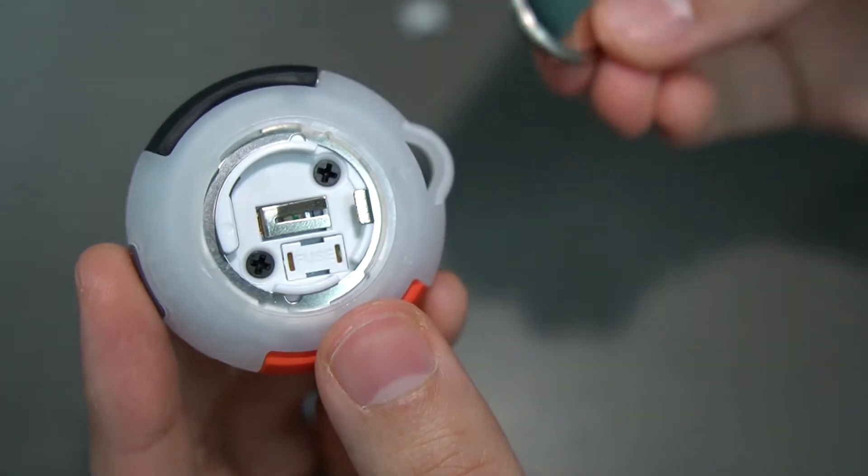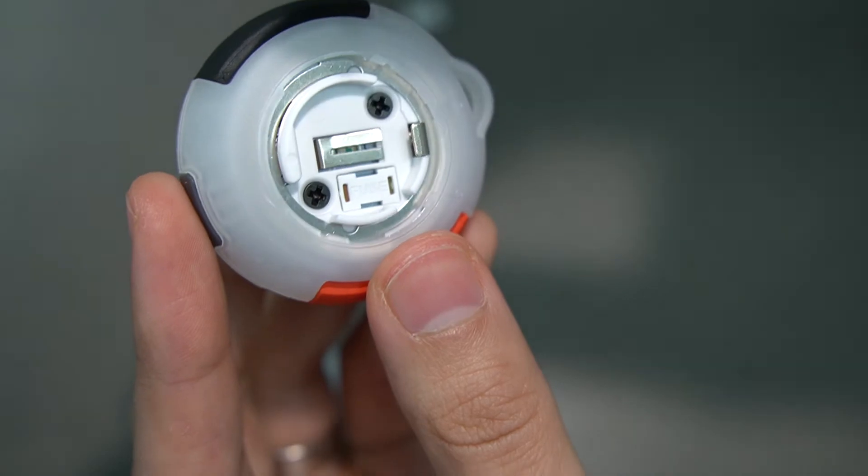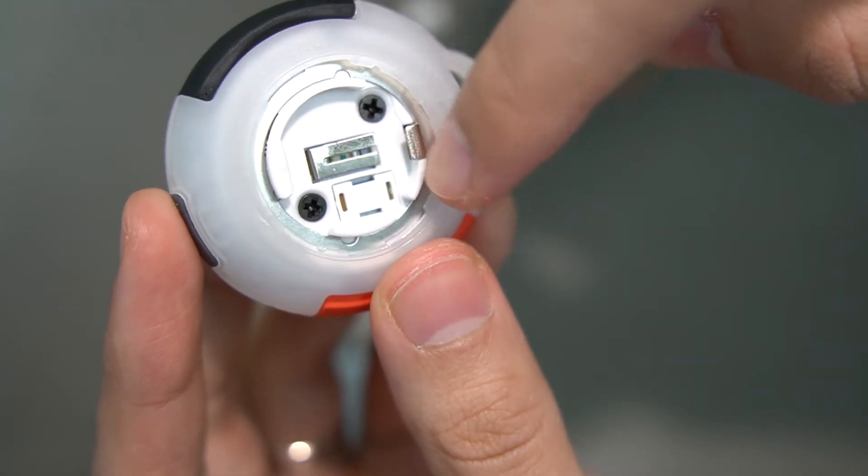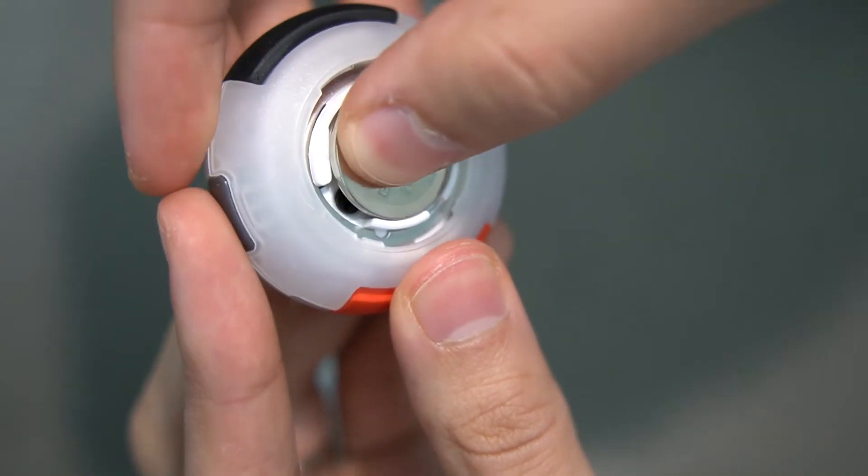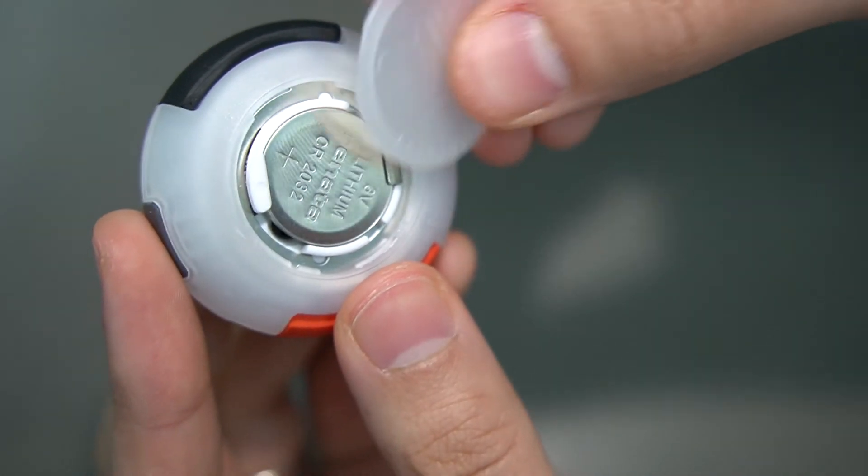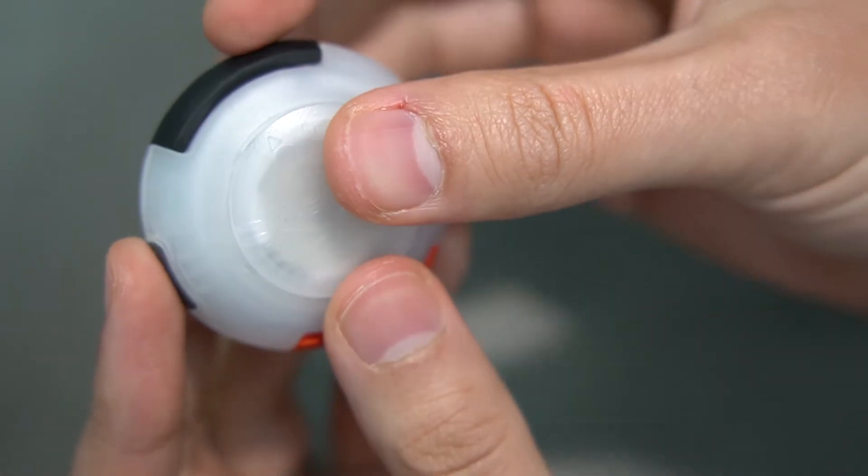So that's the fuse changed. You can take your battery again and you just want to put it in underneath this little silver bit, and then just push down. And then you can twist this back part on again.